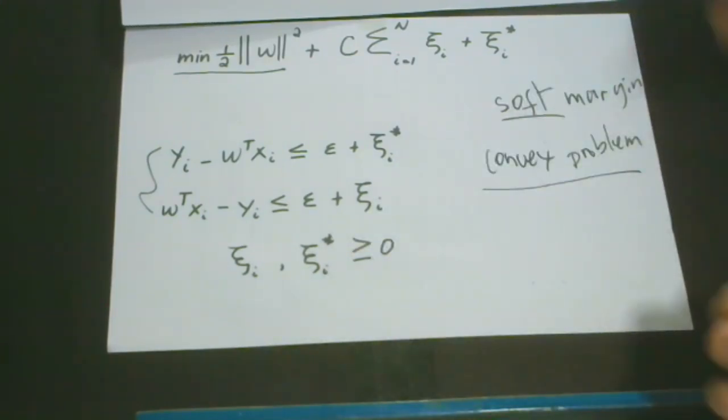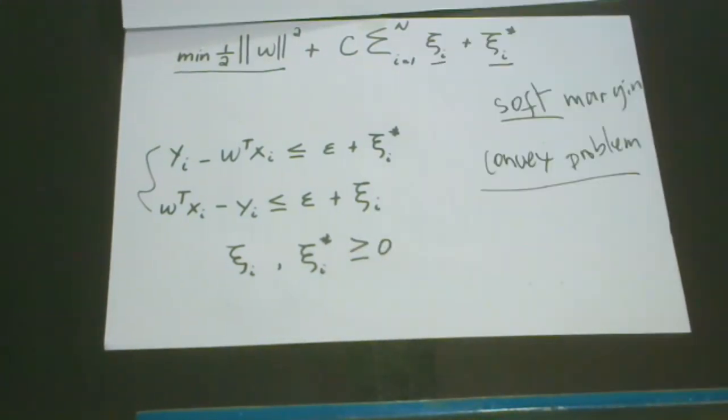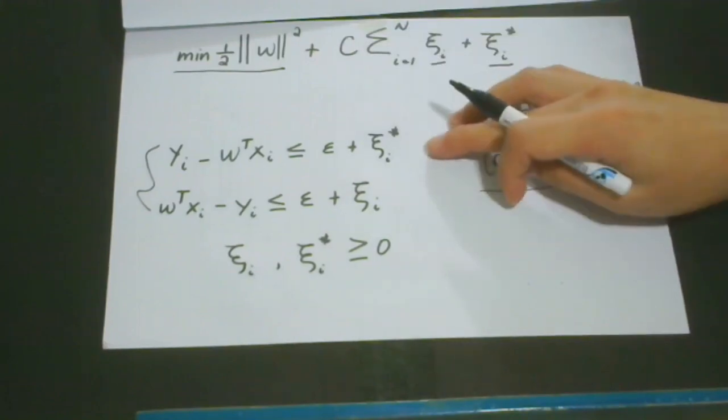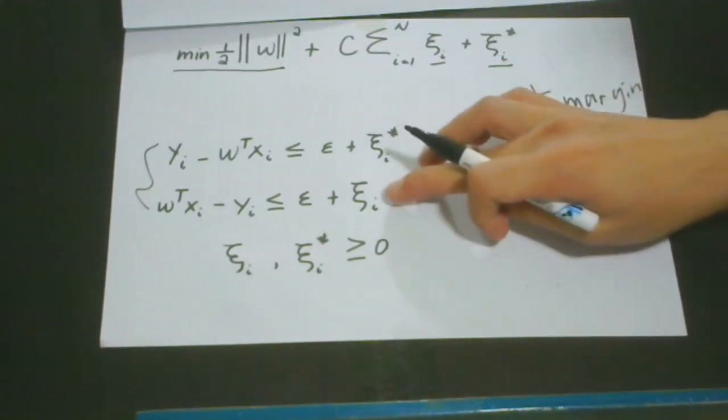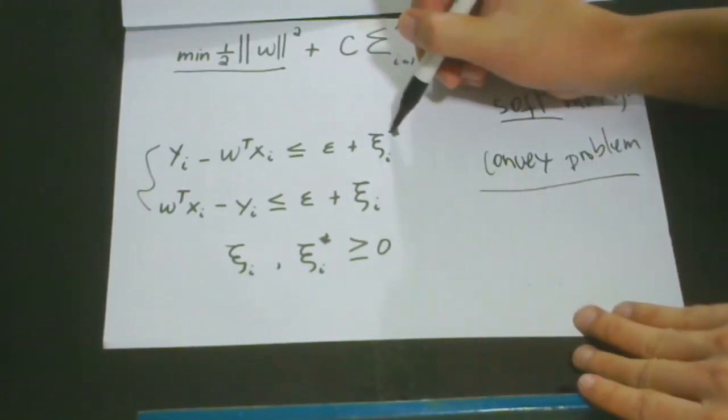So in the constraint, we have added the slack here and then also the slack here. So notice the differences between them. We could see this asterisk. And that means this is below. And this one, which does not have an asterisk, is above.